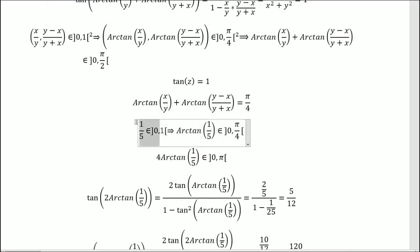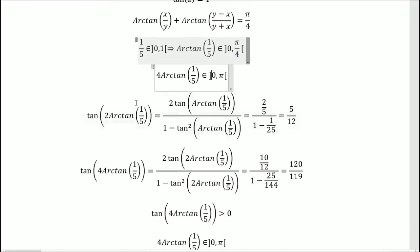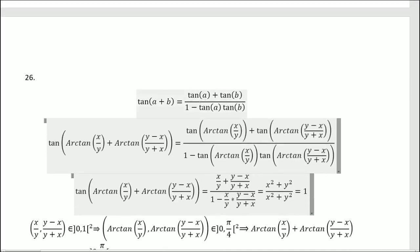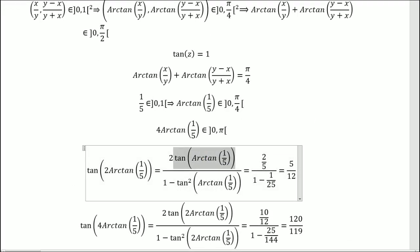So we know that 1 over 5 is between 0 and 1, so arctangent 1 over 5 is between 0 and pi over 4. We multiply it by 4, and we know that it's between 0 and pi, and we'll just put it aside. So we calculate tangent of 2 arctangent 1 over 5. So we get this, by using the previous formula with a equal b. So we have tangent of arctangent, so it's equal to 1 over 5. And we have tangent squared arctangent, so that means it's identity squared. So identity times identity, so 1 over 5 times 1 over 5 is equal to 1 over 25. So we get this, we reduce, we get 5 divided by 12.